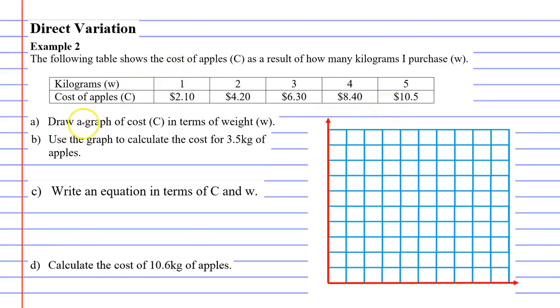It wants us to draw a graph of the cost in terms of the weight, and it's important to figure out which variable is your dependent and which one is your independent variable. The amount of kilograms you purchase is your independent variable because you have a choice. You can choose how many kilograms you would like to purchase, whereas the cost of the apples is dependent because they depend on how many kilograms you purchase.